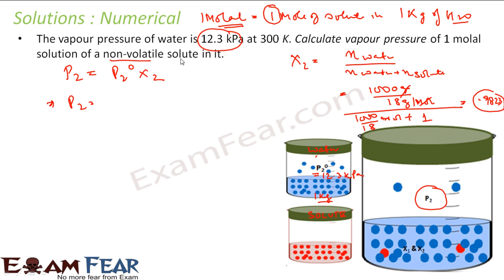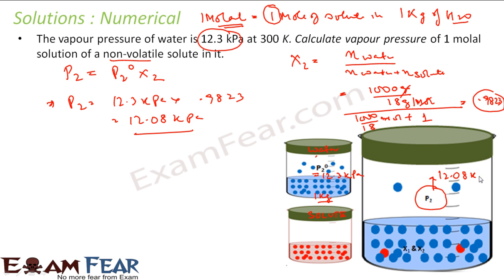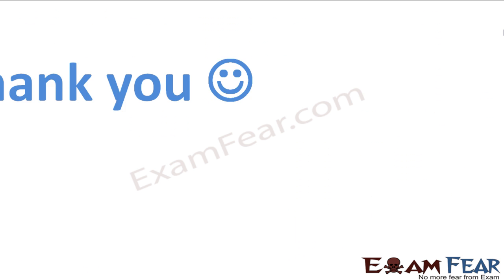Therefore P_solution = 12.3 kilopascal × 0.9823 = 12.08 kilopascal. The vapor pressure has reduced from 12.3 to 12.08 kilopascal. We will see in the next few slides why adding a non-volatile solute reduces the vapor pressure.